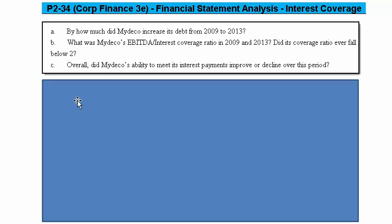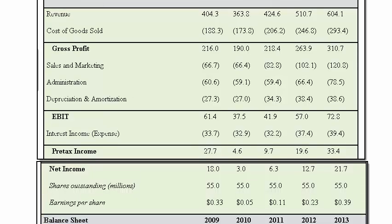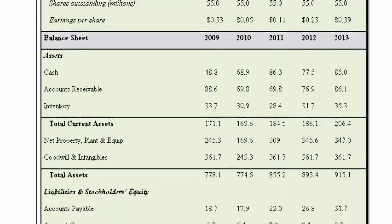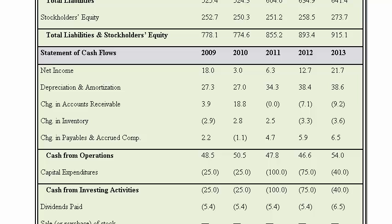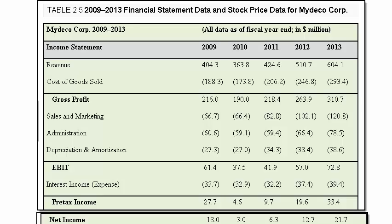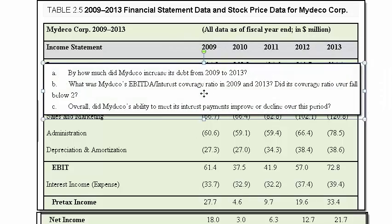Here's the financial information we're given. There's quite a bit more — scrolling down shows balance sheet information and statement of cash flow information, which keeps going until you get to total cash. For this particular problem, we have everything we need to answer these questions just by focusing on the income statement information provided.